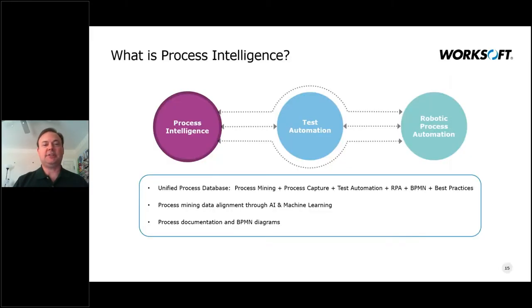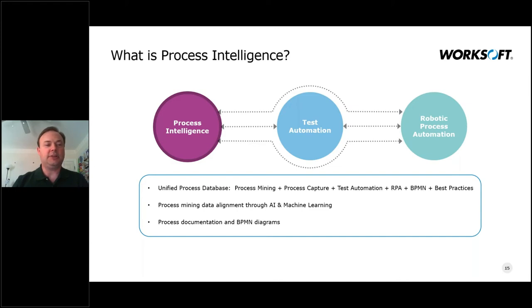Let's start with a brief introduction to process intelligence. This allows us to gather data — we continue to add capabilities to pull data from more areas of the business. We can mine that data from different systems and capture it live from individual users as they carry out process. We can quickly turn that into documentation and automation, both in the form of steps and details as well as business process model notation diagrams, turn that into production automation in the form of RPA, and show you best practices and where the business is optimized or struggling.